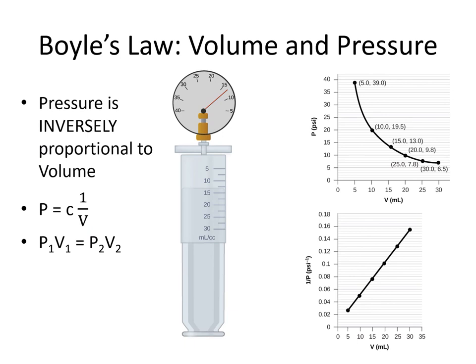Our third gas law is Boyle's law, which tells us that volume and pressure are inversely proportional — as one goes up, the other goes down. This is the only one of our four individual gas laws with an inverse proportionality. We can write it as: pressure is proportional to 1/volume, or pressure equals some constant times 1/volume. Setting the constants equal for two circumstances gives us P1 × V1 = P2 × V2. Because of the inverse proportionality, this is the only one where we multiply the things on each side rather than dividing.